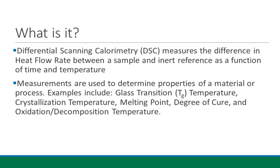With this technique we can determine several different properties of a material or a process taking place inside the system. Examples include glass transition, crystallization, and melting point temperatures. You can determine degree of cure, indicating if a sample is fully cured or not, and what percentage of cure it has. You can also determine oxidation or decomposition temperature, though we typically don't want to decompose samples inside the instrument as it might dirty the cell.